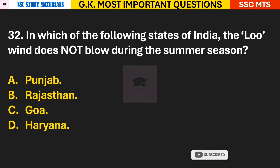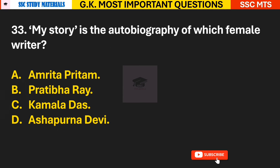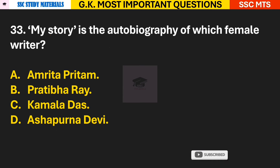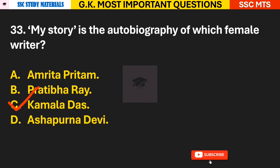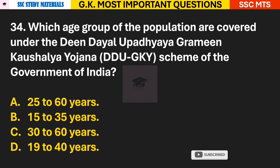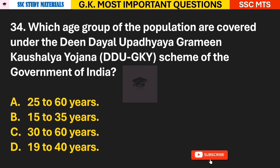Question 32: In which of the following states of India does the Loo wind not blow during the summer season? Answer C — Goa. Question 33: 'My Story' is the autobiography of which female writer? Answer C — it is the autobiography of Kamala Das. Question 34: Which age group of the population is covered under the Deen Dayal Upadhyaya Grameen Kaushalya Yojana scheme?